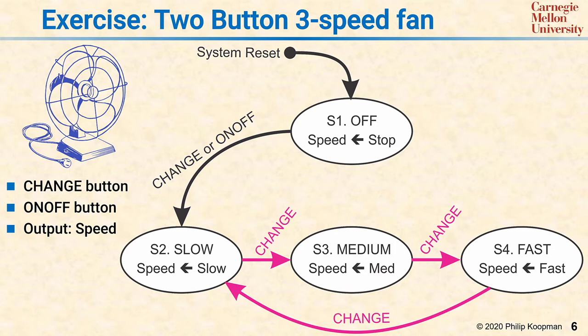But here's a twist. When you're in fast speed, instead of the change button turning the fan off, the change button goes to slow speed. That means that once the fan is operating, the change button cycles through slow, medium, and fast, then back to slow, and never turns the fan off.